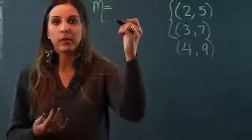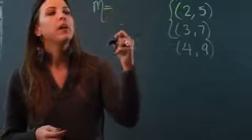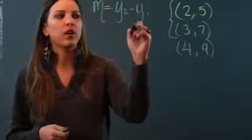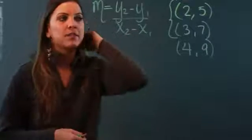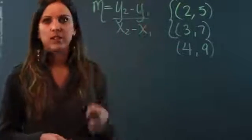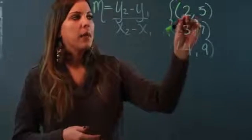Next thing I need to know is the slope formula. So m, which stands for slope, equals y₂ minus y₁ over x₂ minus x₁.